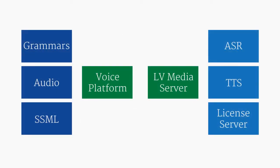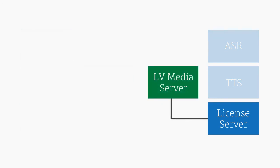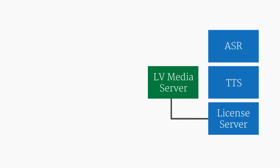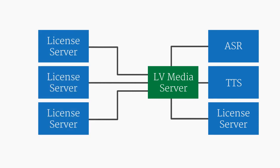The Lumenvox license server provides licenses to the Media Server. Whenever a voice platform requests a new ASR or TTS resource, the Media Server first checks the license server to see if a license is available. Each active MRCP session requires one license. Like ASR and TTS servers, distributed architecture allows for redundant license server infrastructure.